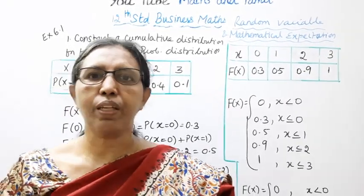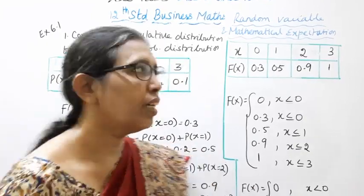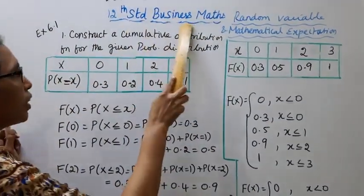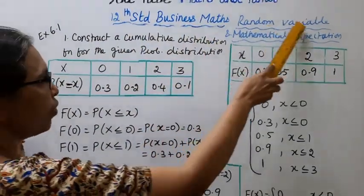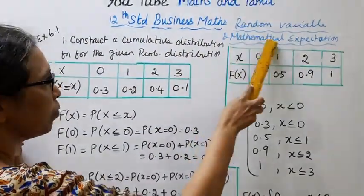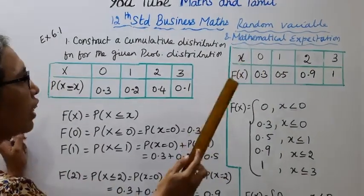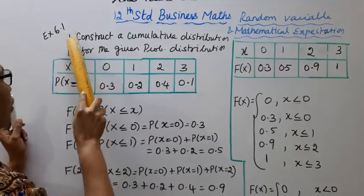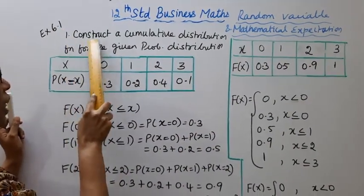Hello students, welcome to Maths and Travel channel. 12th standard business maths — random variable and mathematical expectation. Exercise 6.1, first sum.